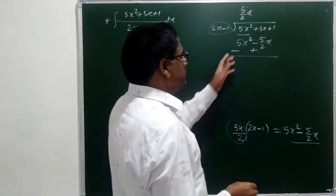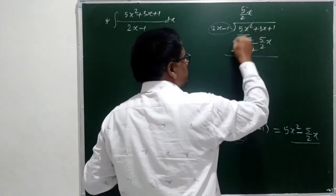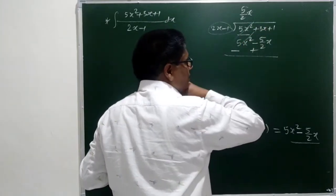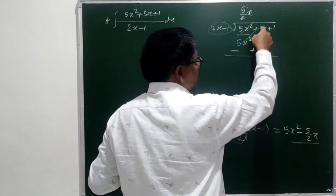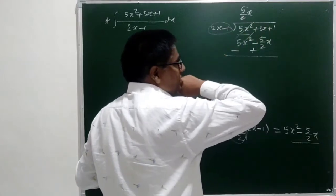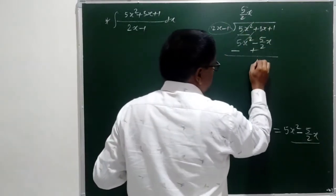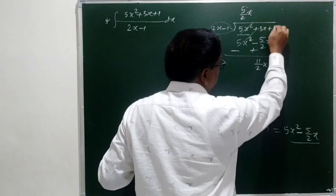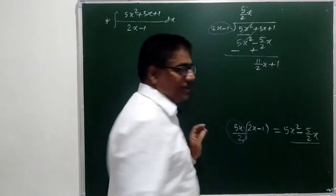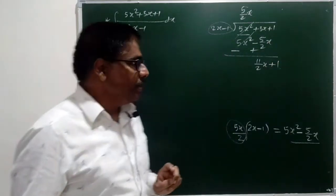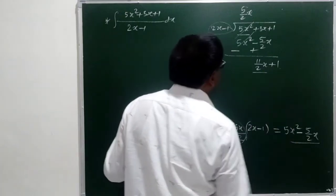Subtract this. After subtracting, the sign will change. 5x squared will get cancelled. Now, 3 times 2 is 6 plus 5 is 11, giving us 11 by 2x, and plus 1 as it is. Now, focus on this term.